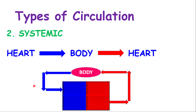The second type is systemic circulation. Think of it as blood flowing from the heart into the entire system of the body and back to the heart. Deoxygenated blood flows from the body into the right side of the heart, and oxygenated blood leaves the left side of the heart and goes into the body.